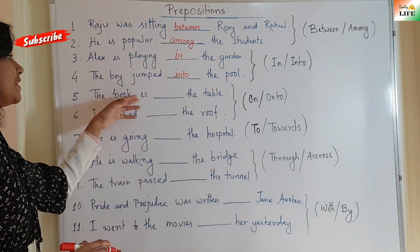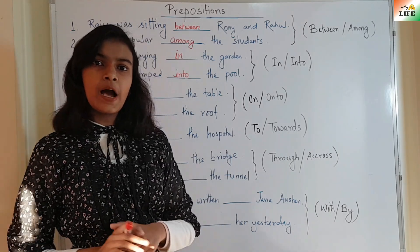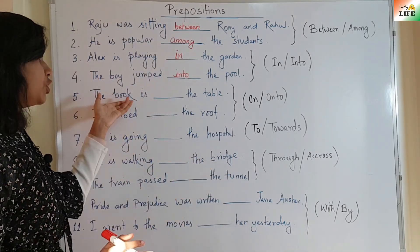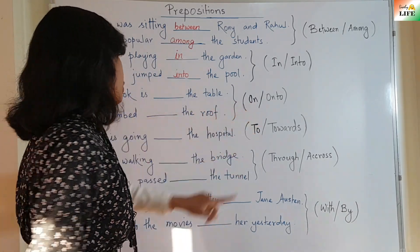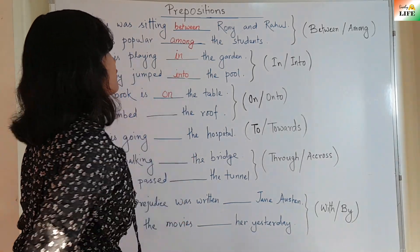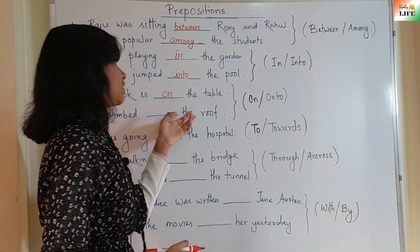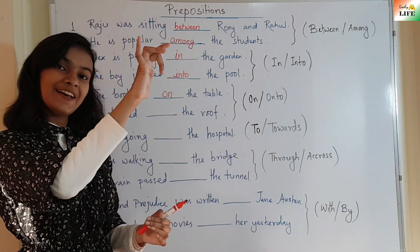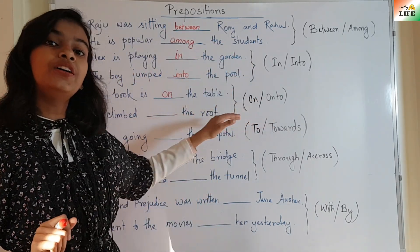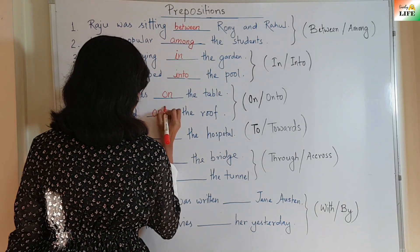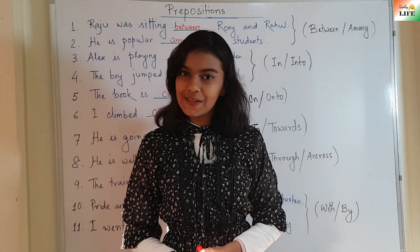The book is — the table. The table is a surface, and the book is not moving, so the book is on the table. I climbed — the roof. I climbed, I moved there, so I climbed onto the roof. This is the difference between 'on' and 'onto'.